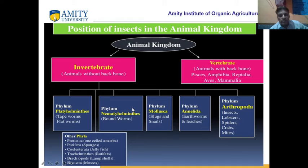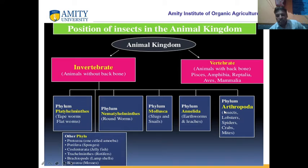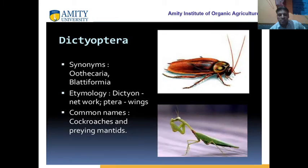Nemathelminthes — round worm, their body is round inside. Mollusca — snails and slugs. Annelids, like earthworm, belong to the phylum Annelida. And the biggest phylum is Arthropoda, which consists of Insecta and other classes — crabs, spiders and different classes. Under Insecta, we are studying many insects. Today we will study cockroach and mantis.